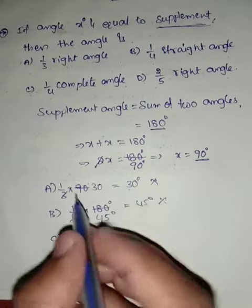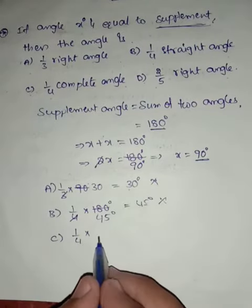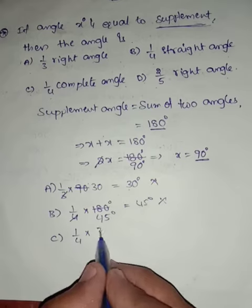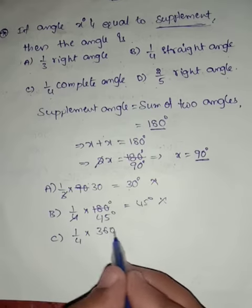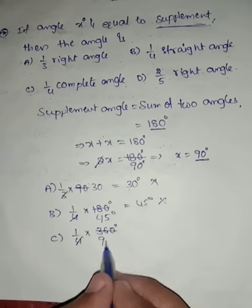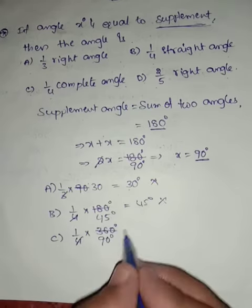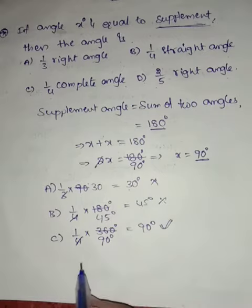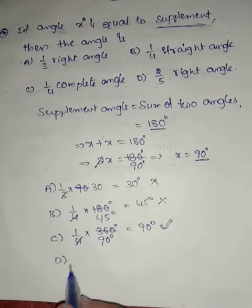Option C is the right answer. Option C: 1/4 complete angle means 1/4 of 360 degrees, which equals 90 degrees. That matches x equals 90 degrees, so option C is the right answer.